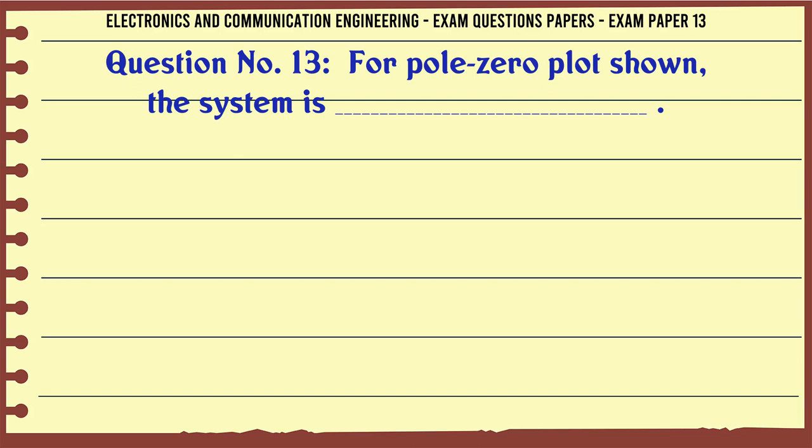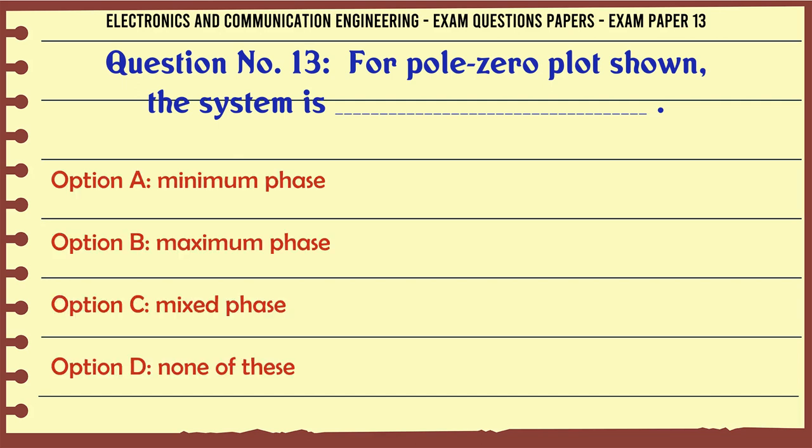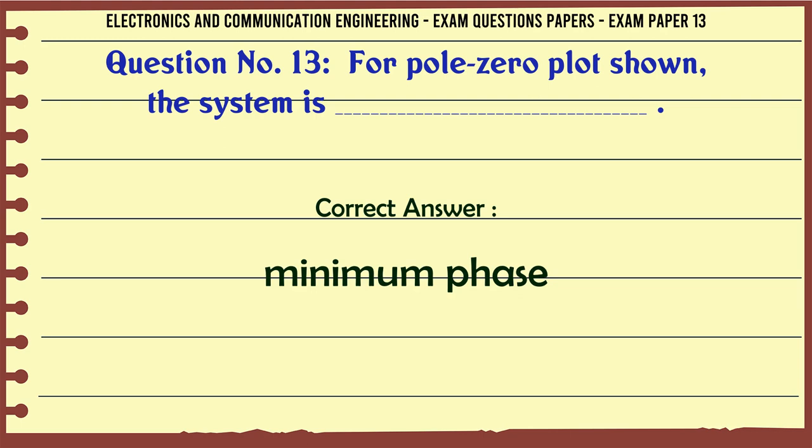For pole zero plot shown, the system is: A: minimum phase, B: maximum phase, C: mixed phase, D: none of these. The correct answer is minimum phase.